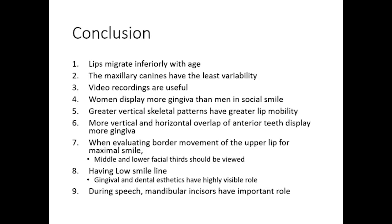Conclusion: Lips migrate inferiorly with age. The maxillary canines have the least variability. Video recordings are useful. Women display more gingival tissue than men. In social smiles, greater vertical skeletal patterns result in greater lip mobility. More vertical and horizontal overlap of anterior teeth displays more gingival tissue. When evaluating border movement of the upper lip for maximal smile, middle and lower facial thirds should be viewed together. Having a lower smile line, gingival and dental aesthetics play a highly visible role. During speech, mandibular incisors have an important role.